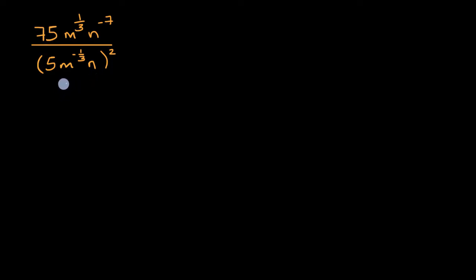There's many ways you could approach this, but what my brain wants to do is first try to simplify this part right over here. I have a bunch of stuff in here to an exponent power. And one way to think about that, if I have a times b to the c power, this is the same thing as a to the c times b to the c power. So we could do that with this part right over here.